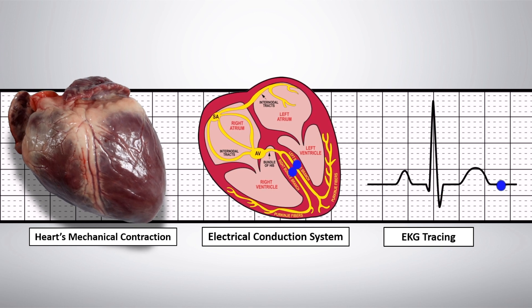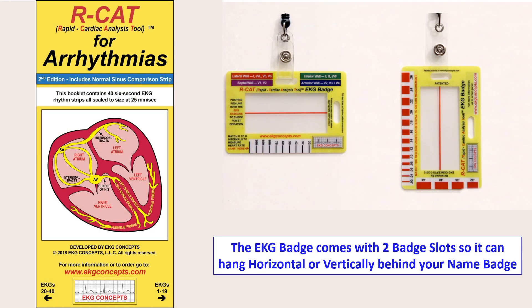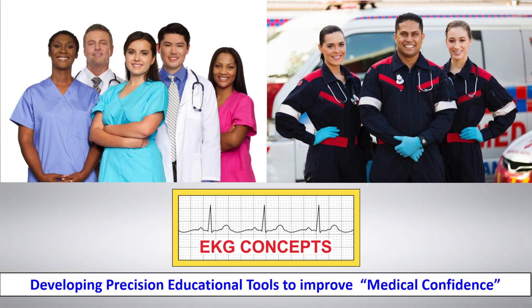Now that you're familiar with the EKG waveforms, the cardiac intervals, and how they correlate to the electrical impulses and mechanical contractions of the heart muscle, let's take an in-depth look at the 39 individual EKG rhythm strips in the pocket RCAT for arrhythmias. The EKG badge comes with two badge slots so it can hang horizontally or vertically behind your name badge. EKG Concepts — developing precision educational tools to improve medical confidence.